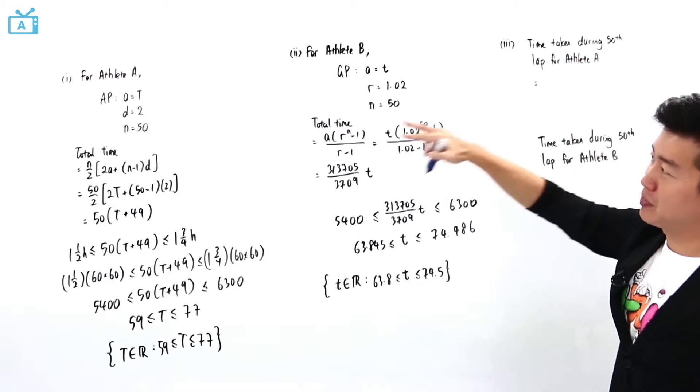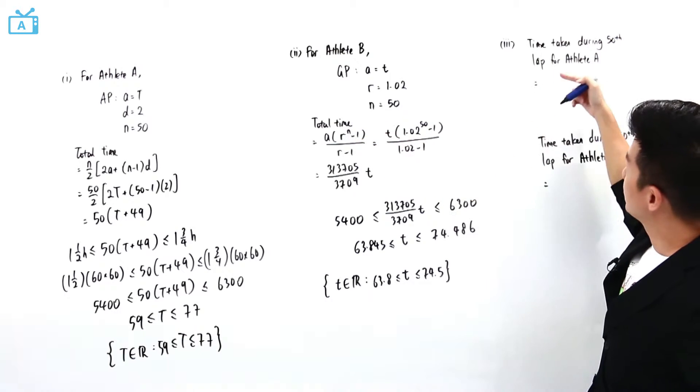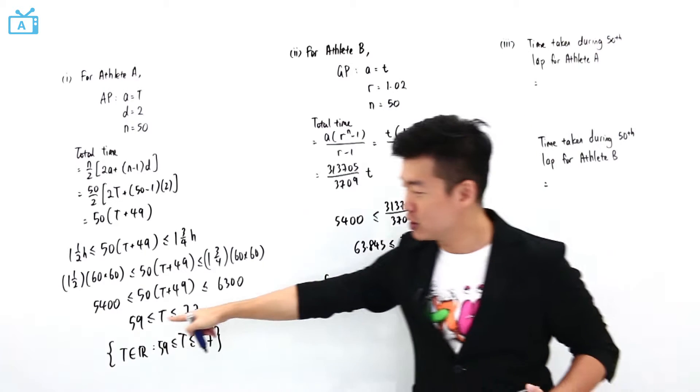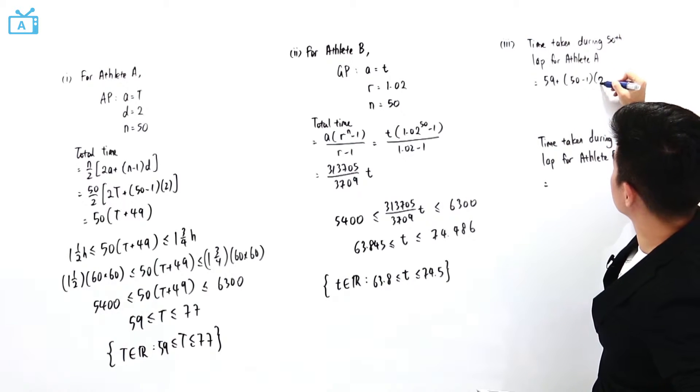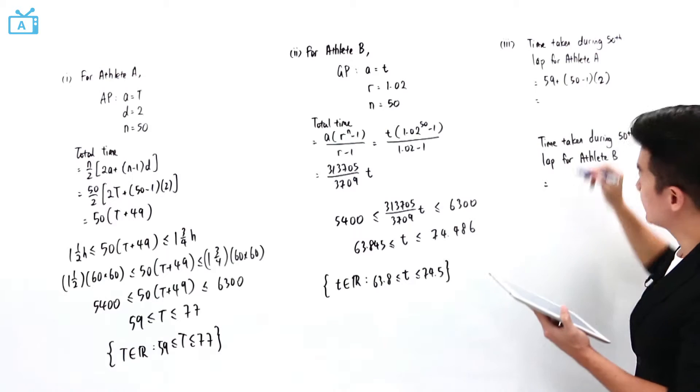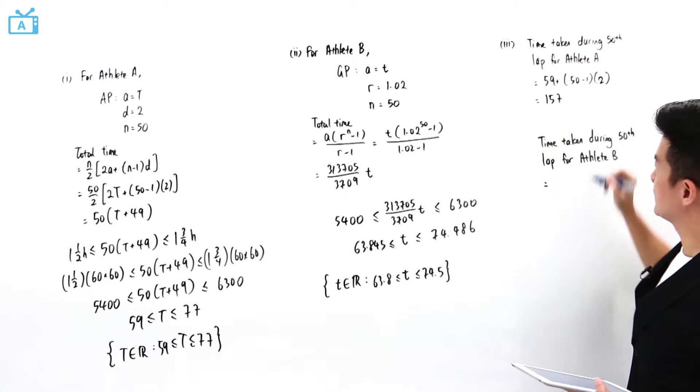For athlete A, applying the AP formula, the first term T is 59. It is 59 plus (n minus 1) times D. So 59 plus (50 minus 1) times 2, where D is 2. The time taken by athlete A is going to be 157.